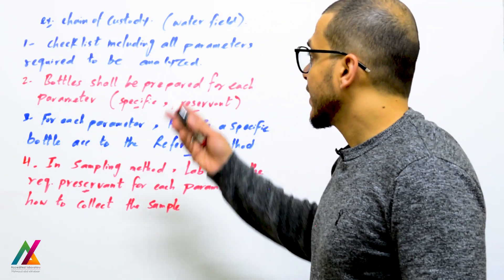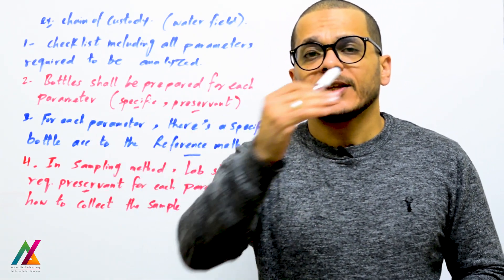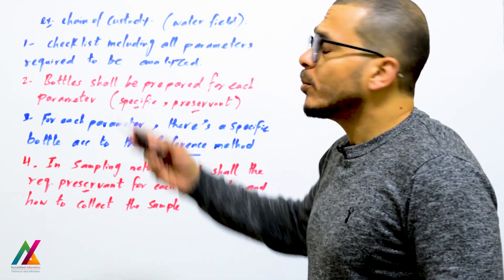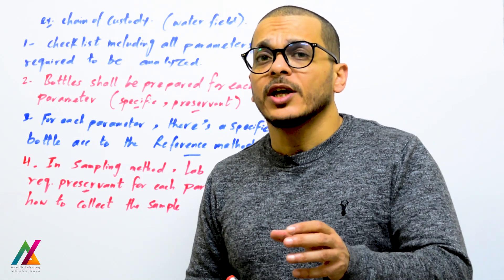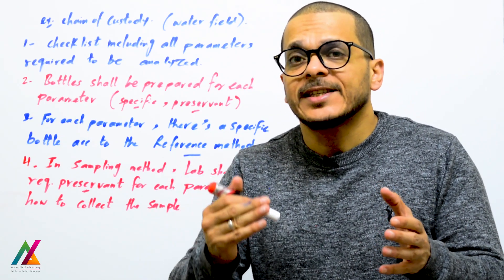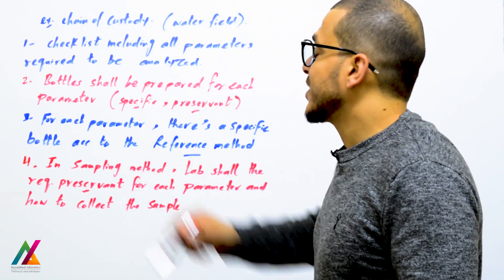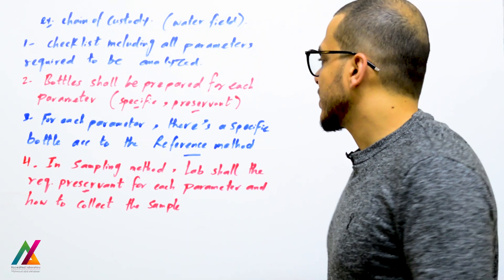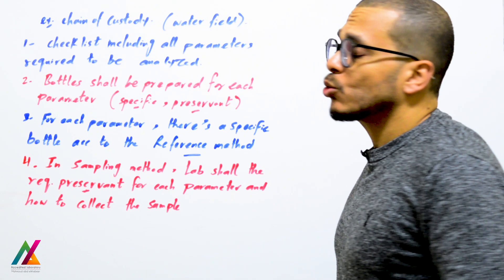As a practical example for chain of custody in water analysis: first, prepare a checklist including all lab units and all parameters required for analysis. Second, prepare bottles — bottles shall be prepared for each parameter according to the reference method, so there is a specific bottle type for each parameter. Preservant shall also be added according to the reference method if required for each parameter.